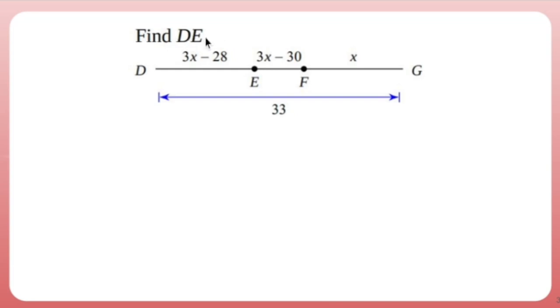Find DE, which is this chunk right here. This uses the segment addition postulate, which says if I add and add and add, I get this whole thing. So since I'm given information about each little segment here, let's just do that. Let's add them all up. DE is 3x minus 28 plus EF is 3x minus 30 plus FG, which is just X. And all of that equals 33.